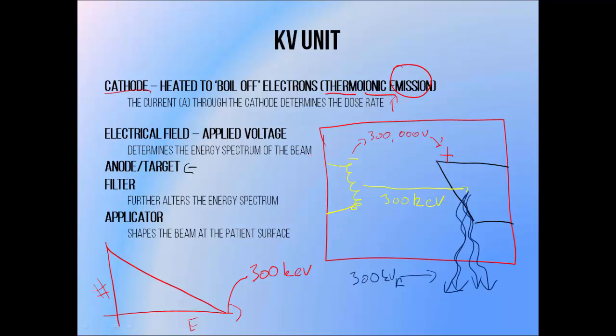You'll have noticed that the photons in this picture leave the target at right angles to the incident electron beam. That's because at relatively low electron energies like these, the bremsstrahlung interaction mostly produces photons in this direction. So the beam exit window is positioned at right angles to the electron beam's direction of travel.